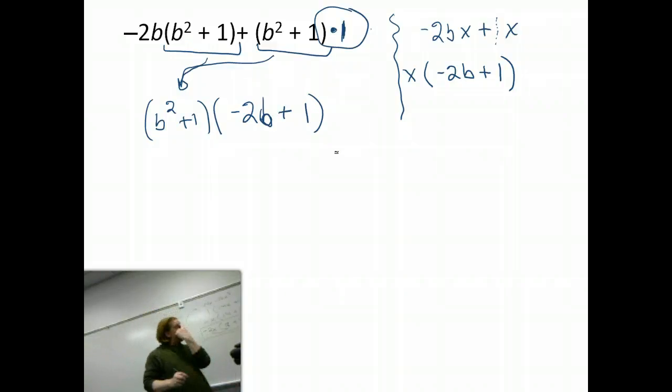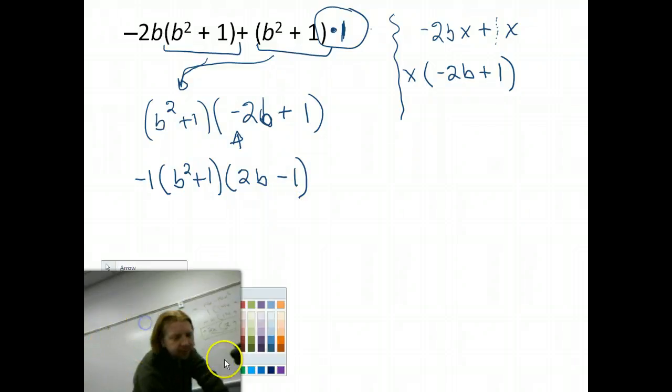Now, there's one more catch. I've got a leading coefficient here of negative one, right? We don't want negatives on the fronts of these. So, I'm going to pull that negative out last. So, that means I'm going to be looking at negative one, b squared plus one, 2b minus one. Yeah. Now, the thing to remember here...